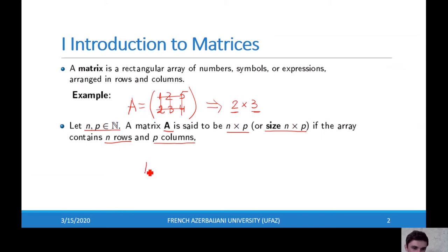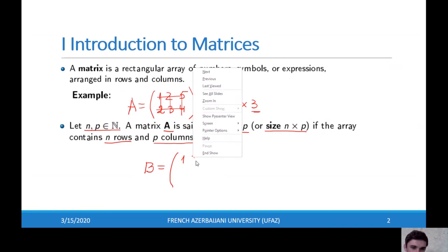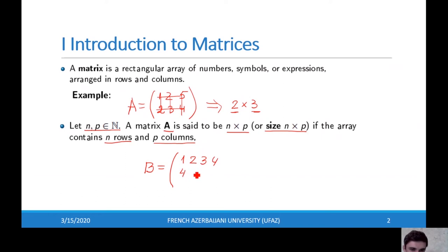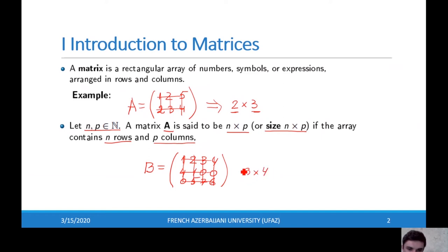Let's look at another example. B is the matrix with entries 1, 2, 3, 4, 4, 1, 0, 0, 0, 0, 5, 7, 6. You can see we have three rows and four columns — three rows and four columns — and this matrix is called a three times four matrix, or three times four size matrix.